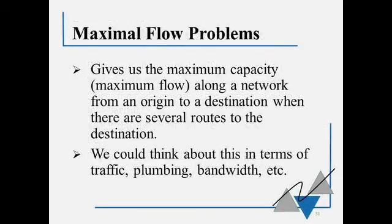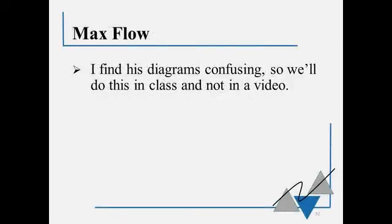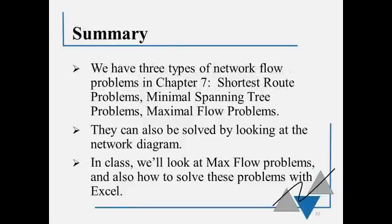The last type of network flow model that's in this chapter is called a maximal flow problem or a max flow problem. It gives us the maximum capacity or the maximum flow along a network from an origin to a destination when there are several possible routes. So we can think of this in terms of traffic, plumbing, bandwidth. Now, the downside of max flow is that I find his diagrams really confusing. And so instead of me trying to do this in a video, we are going to do this in class. And not at first, we're going to start with shortest route and the minimal tree diagrams. But then we will talk a lot about the max flow problems in class.